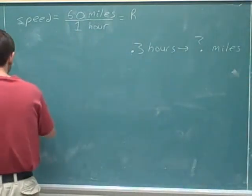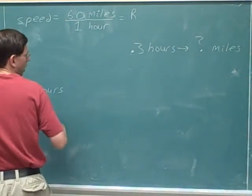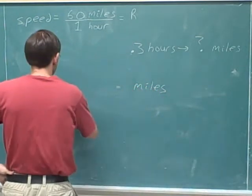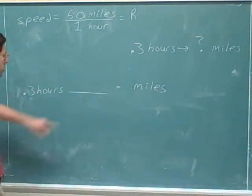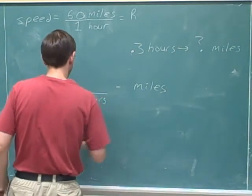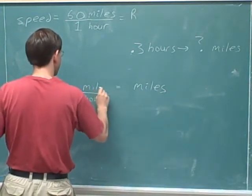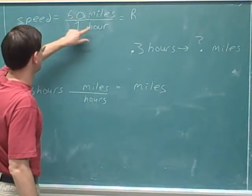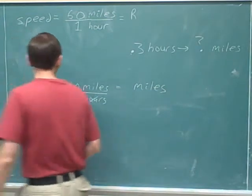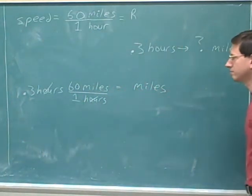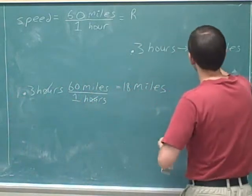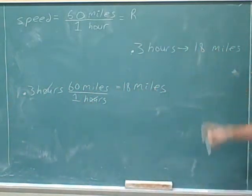Our starting units are 0.3 hours. Our target is miles. We write down the ratio unit. What units do we have to put down here? We have to put hours down here, because we want these hours to cancel the hours up here. That means miles go on the top. Now we can put in our numbers: 60 miles and one hour — 60 on the top, one hour on the bottom. The units cancel, and now we have 0.3 times 60, which is 18. In 0.3 hours, you would travel 18 miles.